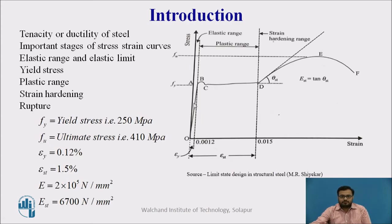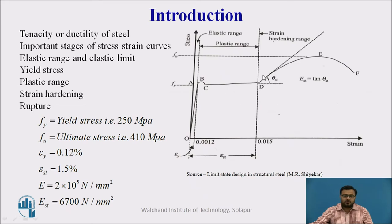We'll start with the introduction. First of all, ductility of steel. What is meant by ductility? Ductility is a property of steel with the help of which the steel can be drawn into wires. This is a stress-strain curve of mild steel, where stress is on the y-axis and strain is on the x-axis. We'll see the important stages of this stress-strain curve for mild steel.